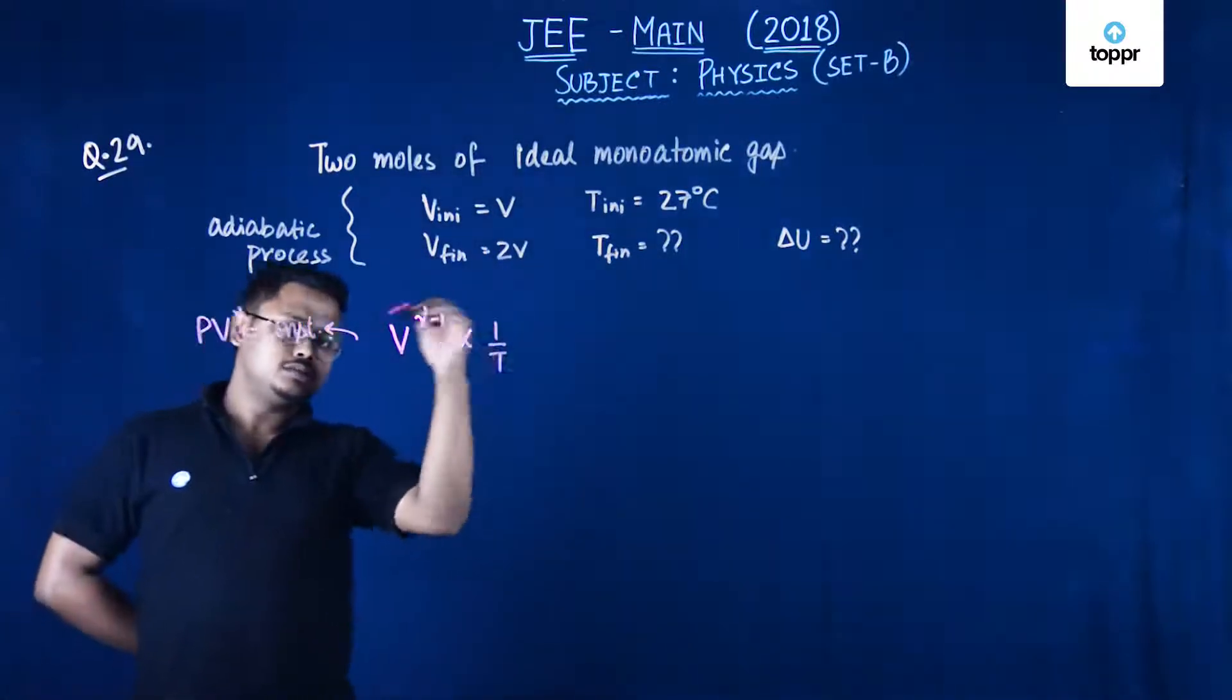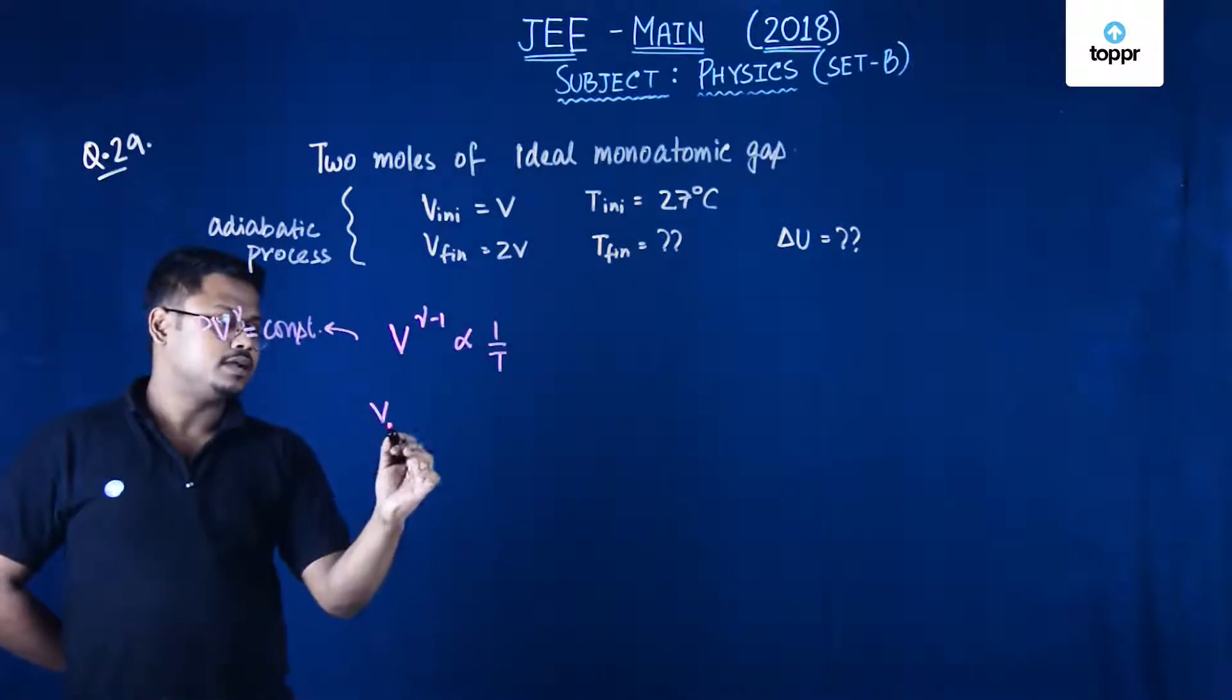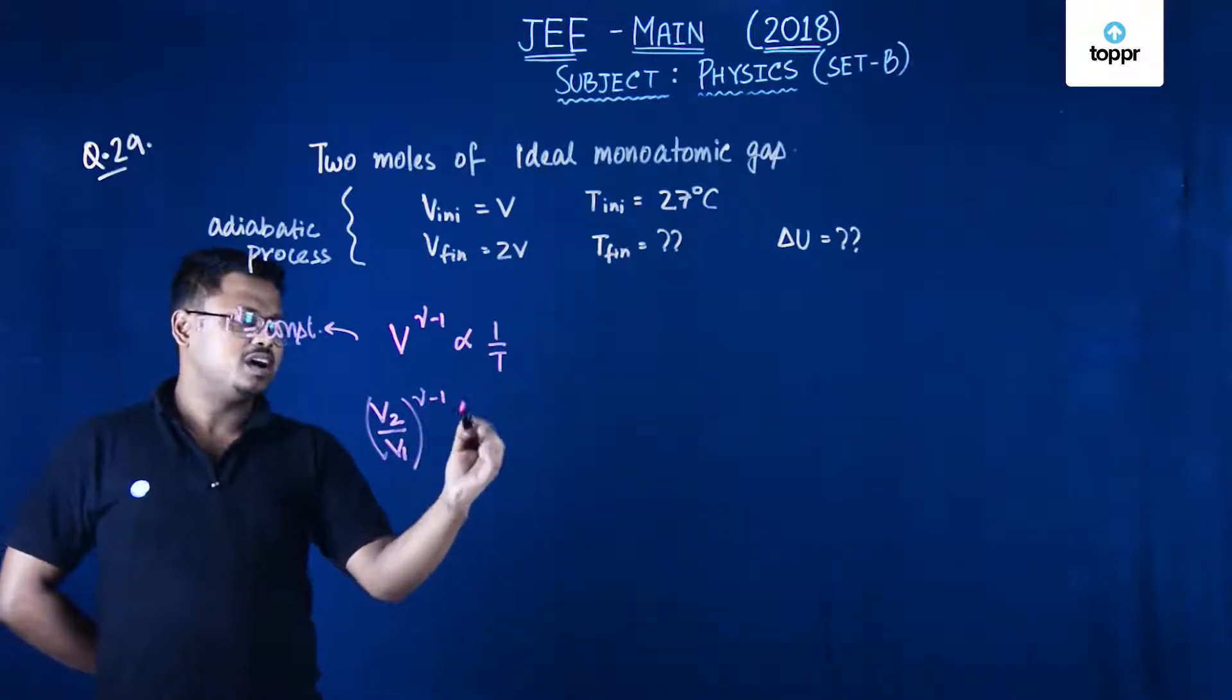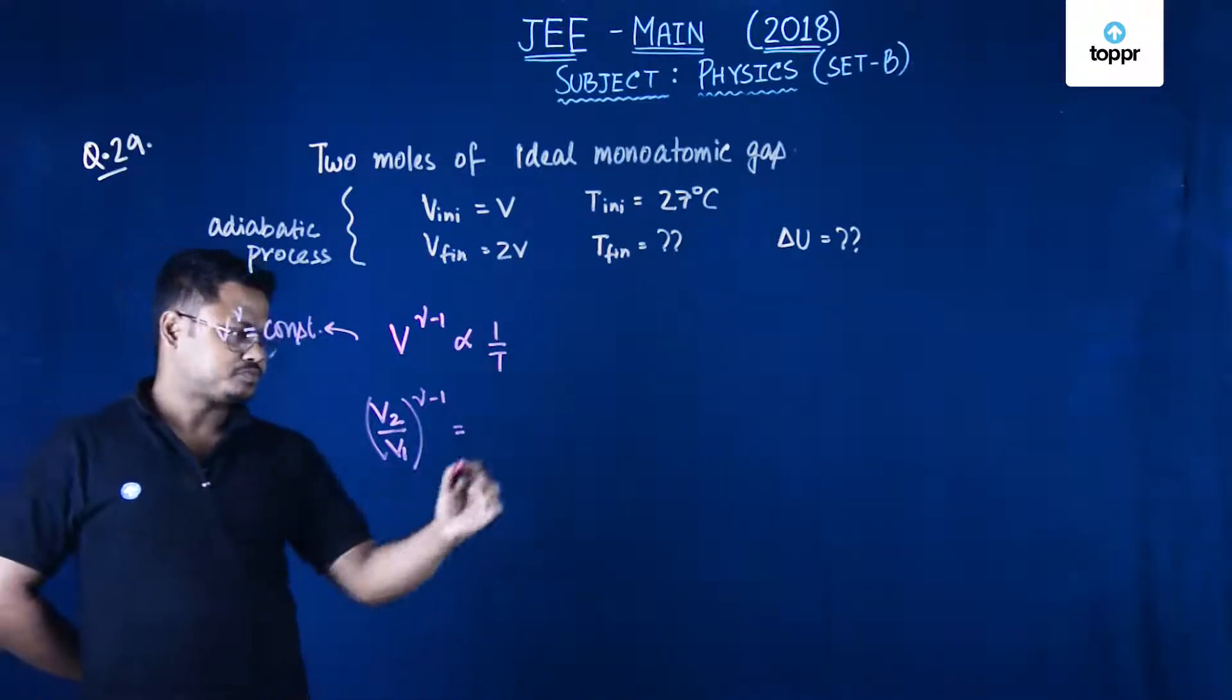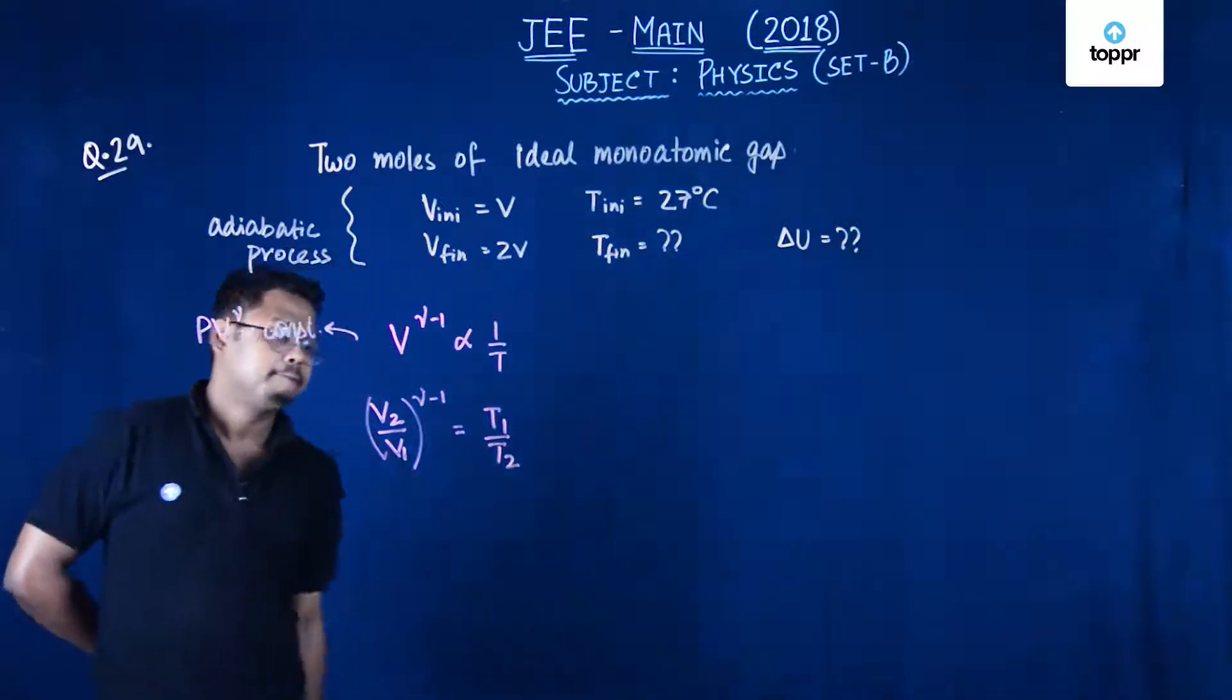Now by using this particular property we can write that V2 upon V1 whole to the power gamma minus 1 is equals to T1 upon T2.